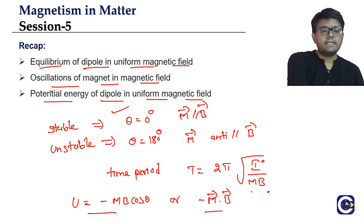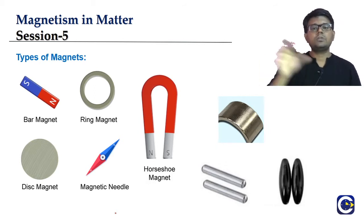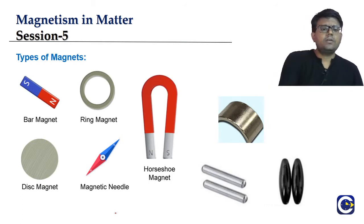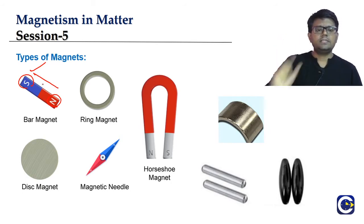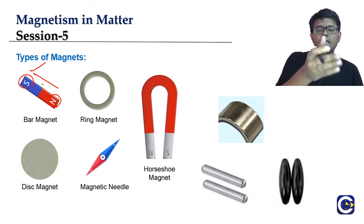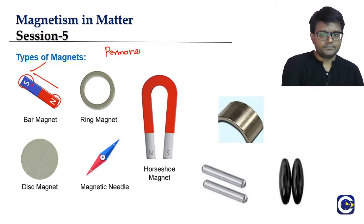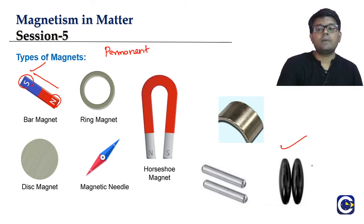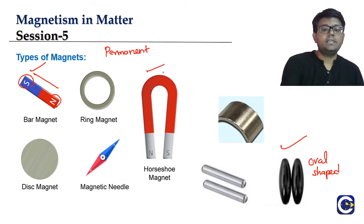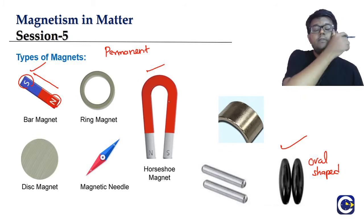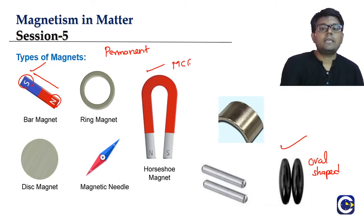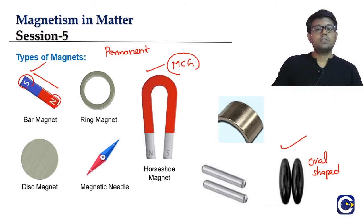For most of our derivations, we have been talking about the bar magnet with a south pole and north pole as a straight rod — a type of permanent magnet. But there are other types: oval-shaped magnets, horseshoe magnets (used in moving coil galvanometers), magnetic needles (used in compasses), and cylindrical magnets. Each has a north pole and a south pole on different ends.